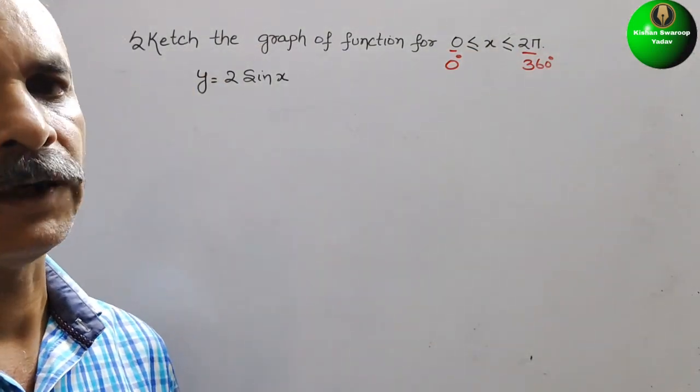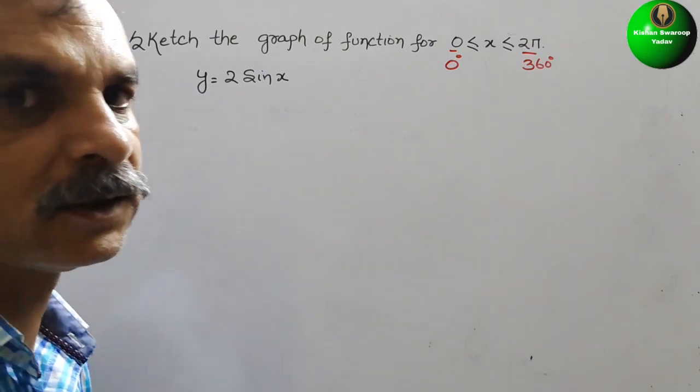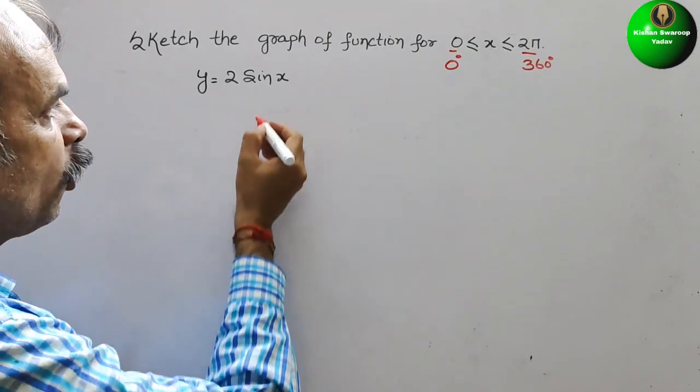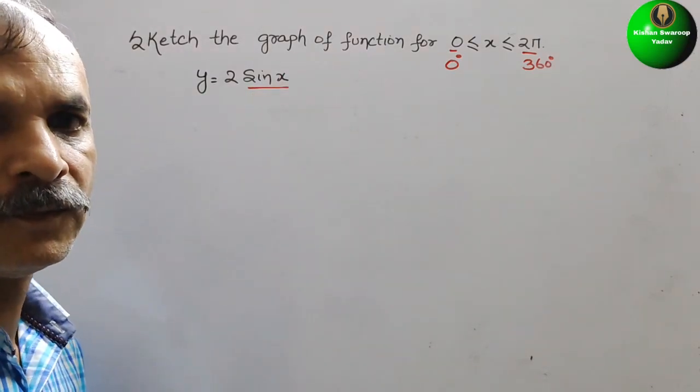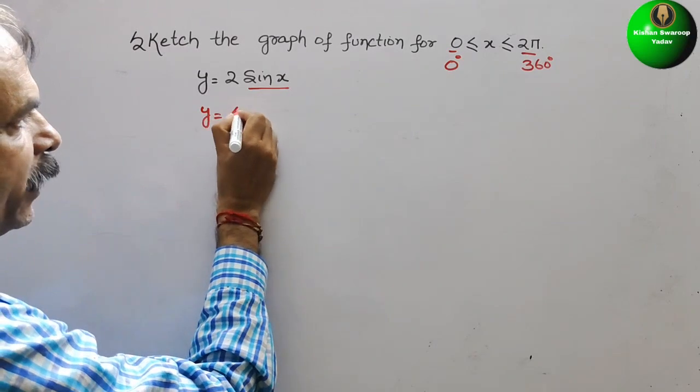So see what they have given. They have given y is equal to 2 sin x. So first we will make only sin x, the original one. That is your y is equal to sin x. First we will make it.